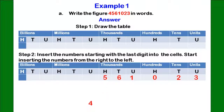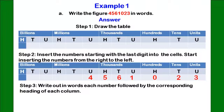And finally, the last digit is inserted in the units column under million, which is the parent's name. Now, the step we are going into is to write out in words each number followed by the corresponding headings or parent's name of each column.